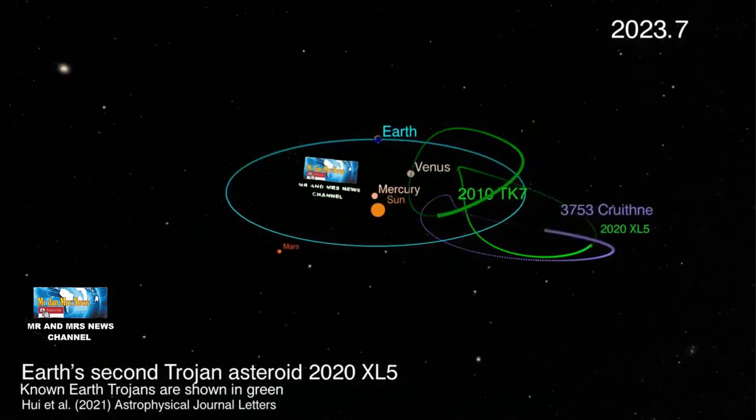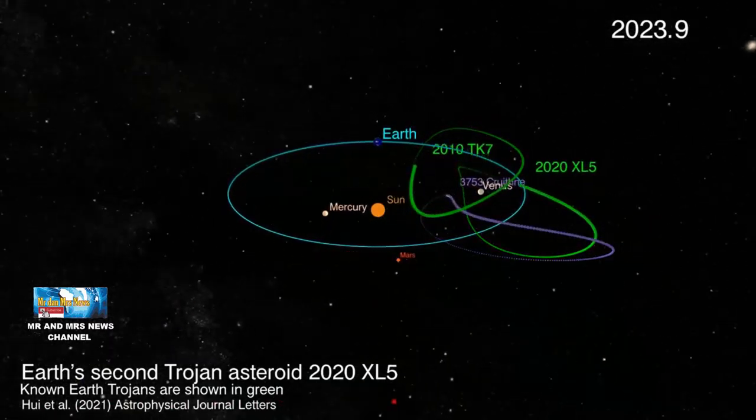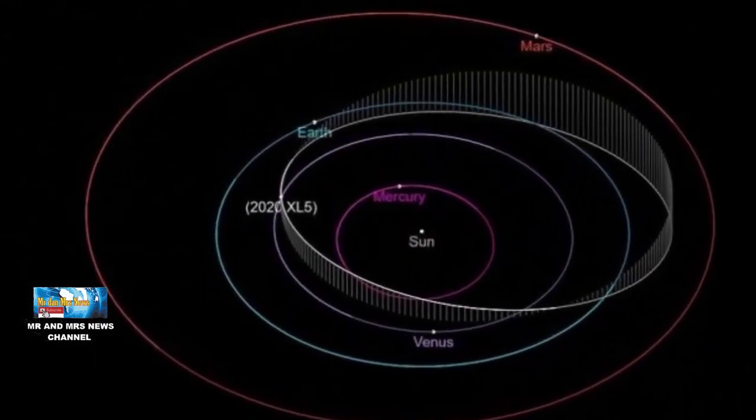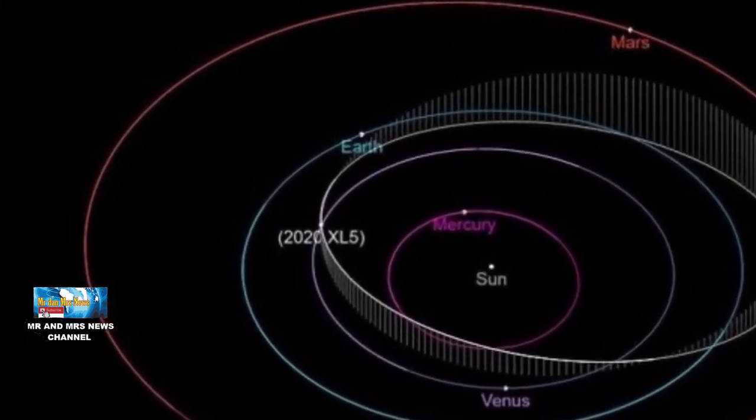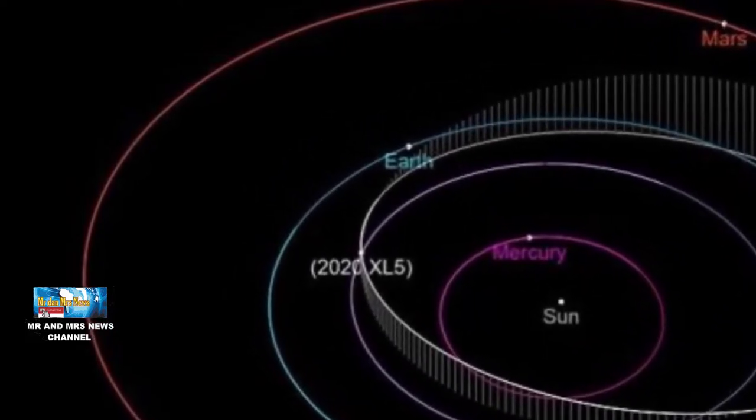Trojan telah dikenal di tata surya dengan planet Jupiter memiliki paling banyak, yakni terdapat lebih dari 11.000 Trojan. Sementara itu, Neptunus memiliki 32, Mars memiliki sembilan, dan Uranus memiliki satu.